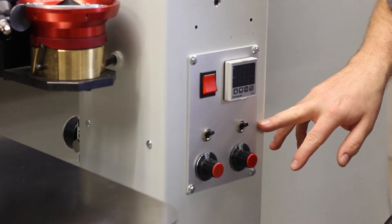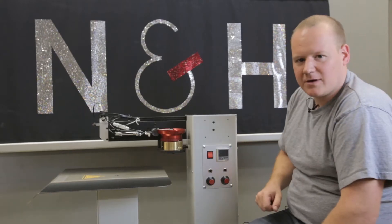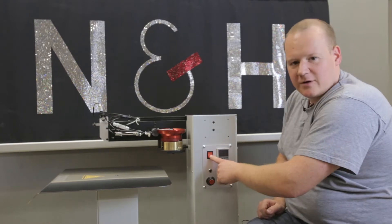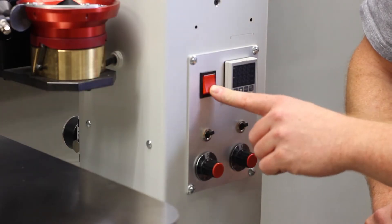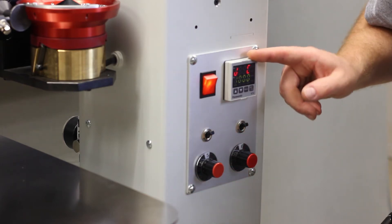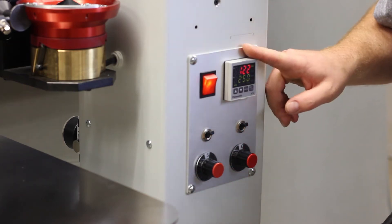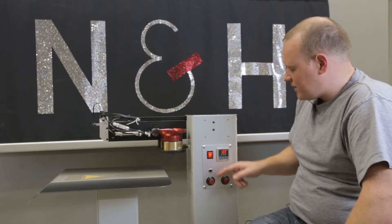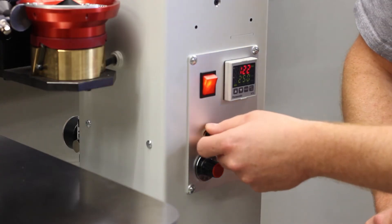You find some switches here. The right button on the top is the on and off switch, so if the machine is plugged, you can turn on the switch. You see the temperature controller is turning on.